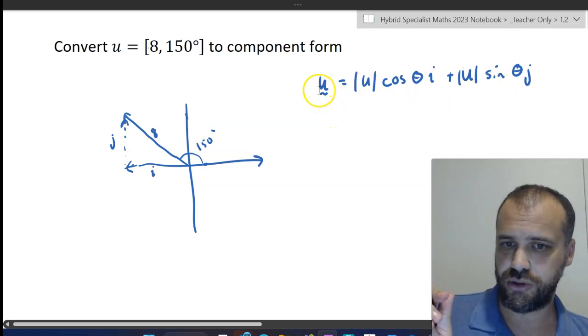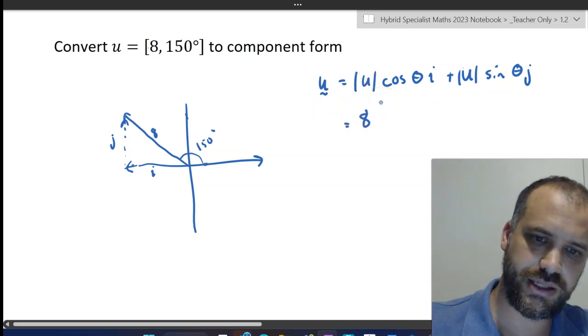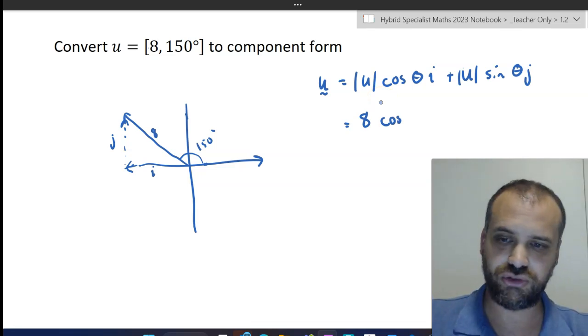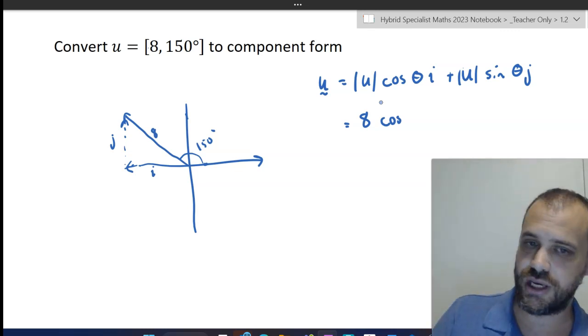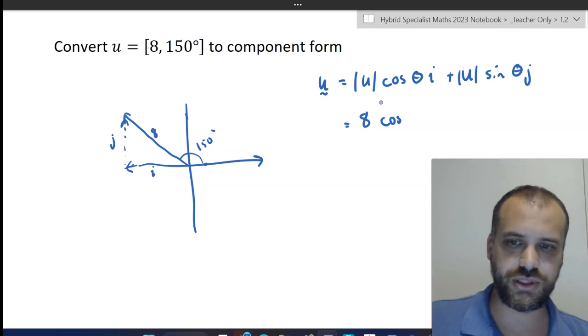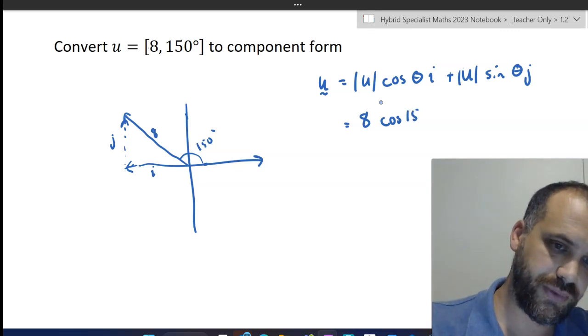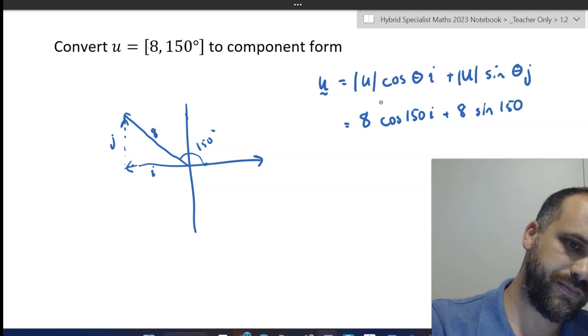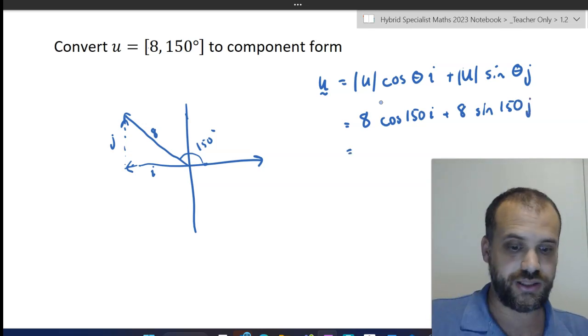To move to component form, we do the magnitude. So in this example, the magnitude is 8 cos the angle. Now, there's no need to try to find like the small angle here or anything, just use the angle. If the angle is negative, use a negative angle. If the angle is positive, use a positive angle. If it's 150 degrees, use 150 degrees. 8 cos 150 degrees i plus 8 sine, use the angle again, 150 degrees j. And then you just type that into your calculator.